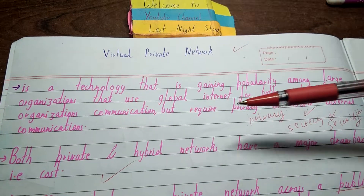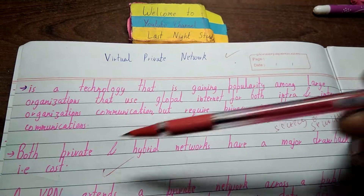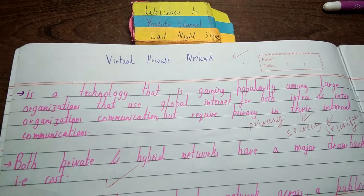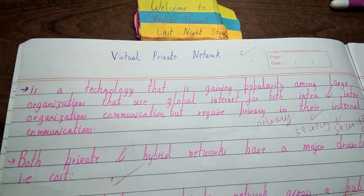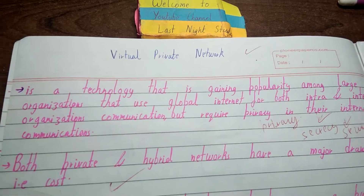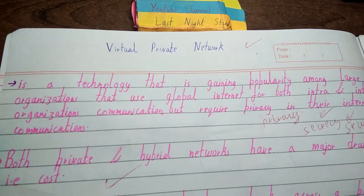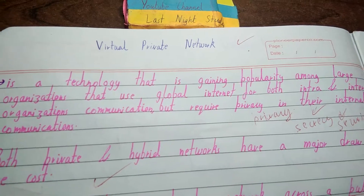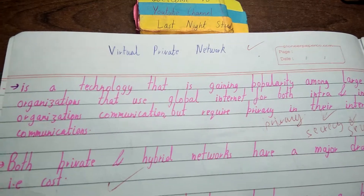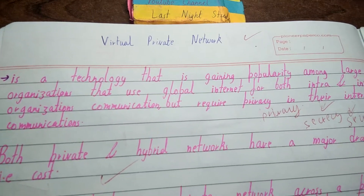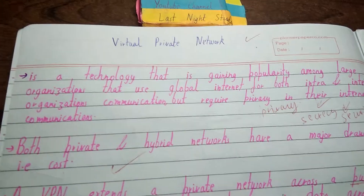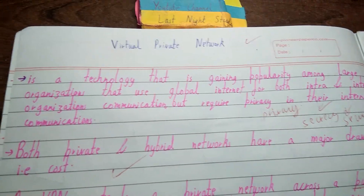One more thing that promotes VPN is that both private and hybrid networks have a major drawback — cost. Private and hybrid networks need external infrastructure to be installed, which is very costly, plus you need to pay monthly fees. Whereas VPN works within a public network only, so it does not need any external infrastructure, making it very cost effective and cheap compared to private and hybrid networks.